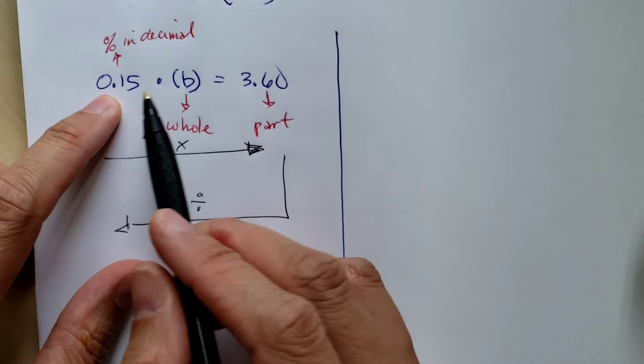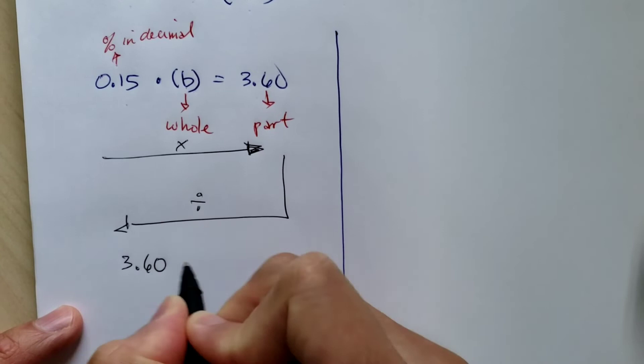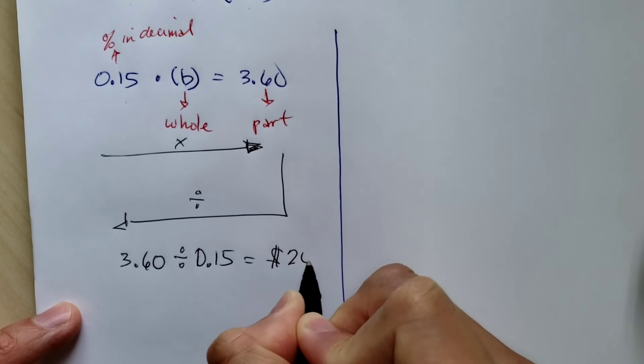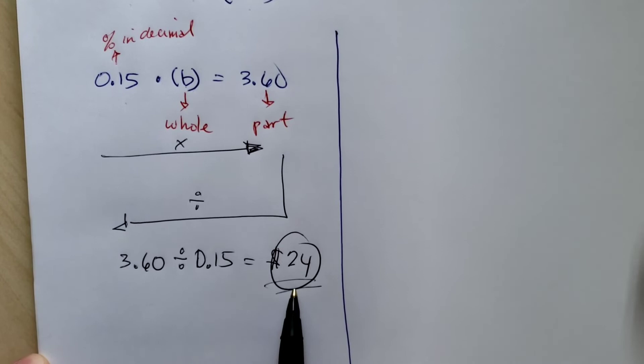So now, since we don't know what B is, let's divide 3.60 by 0.15. So 3.60 divided by 0.15, and that gives us $24.